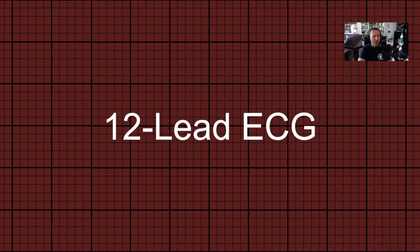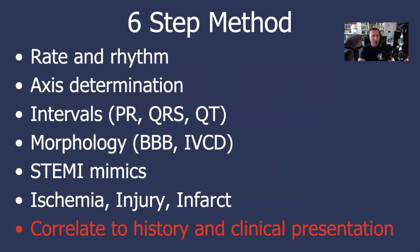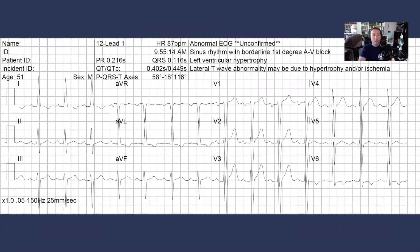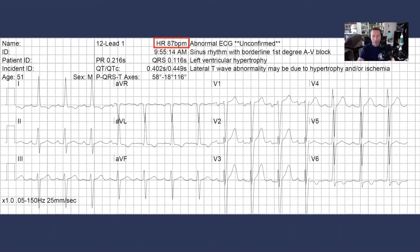Let's go ahead and look at a 12-lead ECG. As always, we're going to use this six-step method and start with rate and rhythm. The computer is calculating the heart rate at 87 beats per minute. Using the large block method, we find an R wave close to a large block and count: we get a heart rate of 100 at three blocks, and 75 at four blocks. We're right in between, so the heart rate should be somewhere between 75 and 100 — consistent with the computer's calculation, and we have a nice regular rhythm.